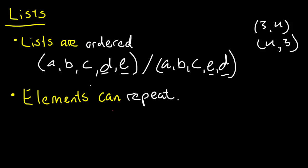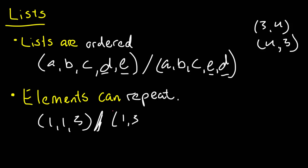Order matters is what we like to say. Also, in lists, elements can repeat. So a list like (a, 1, 1, 3) is completely valid. We could also have (a, 1, 3, 1) — we can have two of the same element.